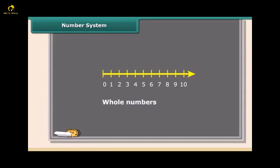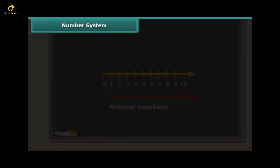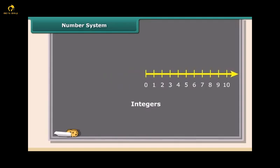Whole numbers are simply the numbers 0, 1, 2, 3, 4, 5 and so on. There are no fractions. Natural numbers are the positive whole numbers except 0. Integers are like whole numbers but they also include negative numbers. So integers can be positive, negative and 0.